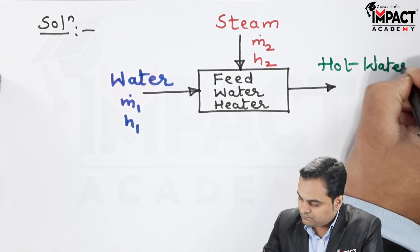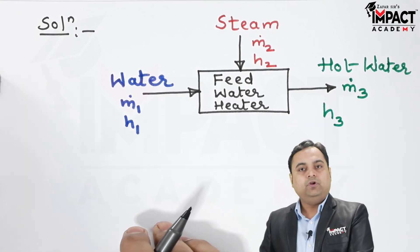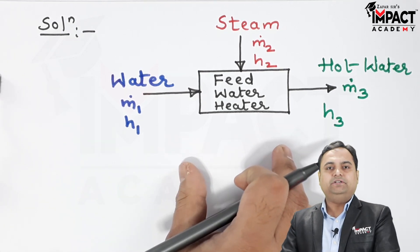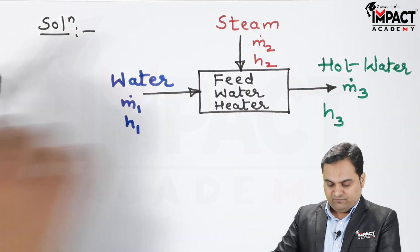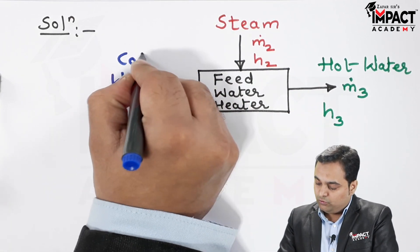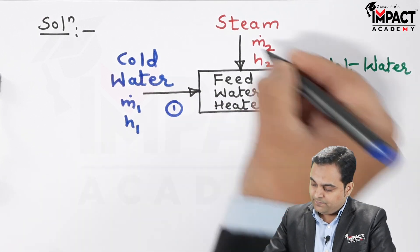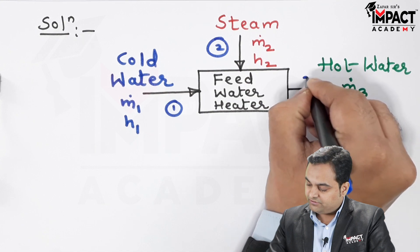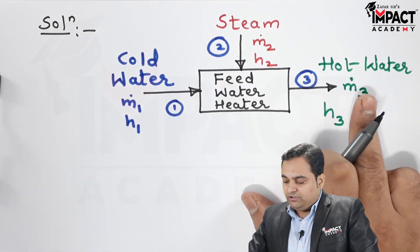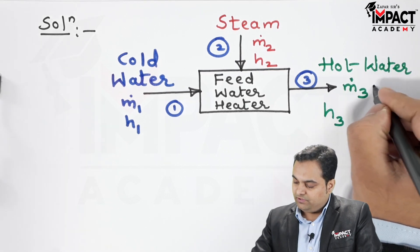At the outlet we get hot water with mass flow rate M_dot3 and enthalpy H3. That is the direct mixing type of feed water heater — used to heat water by using steam, which is at a comparatively higher enthalpy and temperature. This is State 1, the steam inlet is State 2, and the outlet is State 3. We have to find the mass flow rate and specific enthalpy of the hot water leaving.